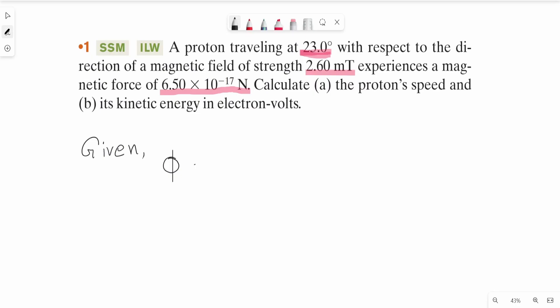The given values are: angle phi equals 23 degrees, magnetic field strength B equals 2.6 millitesla which is 2.6 times 10 to the power minus 3 tesla, and the magnetic force FB equals 6.5 into 10 to the power minus 17 Newton.